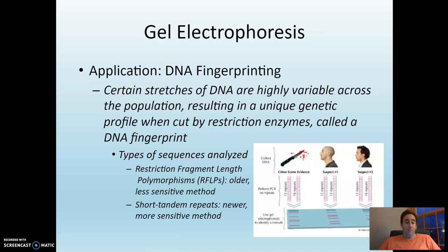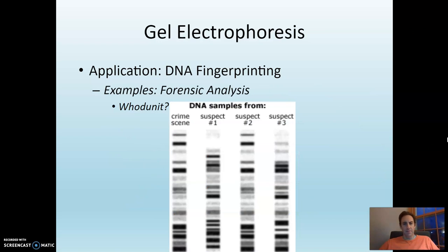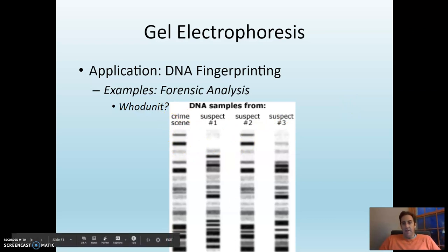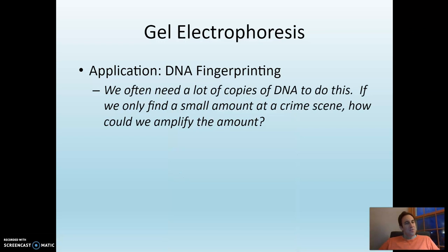One application is DNA fingerprinting — again, forensics. Certain stretches of DNA are highly variable across the population, creating a unique genetic profile when cut by restriction enzymes. This profile is called a DNA fingerprint. You can take DNA from a crime scene and from each suspect, run it through this process, and compare the patterns of restriction fragments. The only issue is we often need lots of copies of DNA to do this — so if we only find a small amount, how do we amplify it? PCR — polymerase chain reaction.